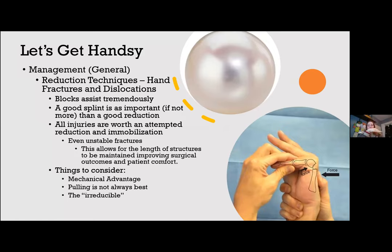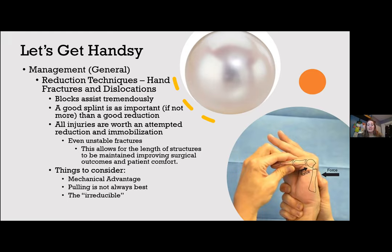Volar MCP dislocations should similarly not be treated with traction, as this can trap extensor tendons or collateral ligaments within the joint space. Instead, have the patient flex at the MCPs and then walk the proximal phalanx over the MC head as you extend the MCP.